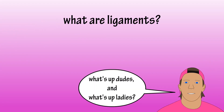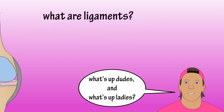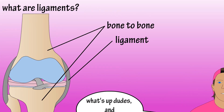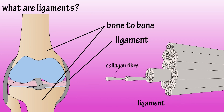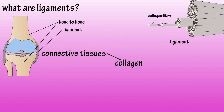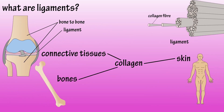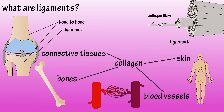What are ligaments? Ligaments are connective tissue that connect bones to other bones. They're made up of collagen fibers, which are packed close together. Collagen is a structural protein that is found in connective tissues, bones, skin, and blood vessels.